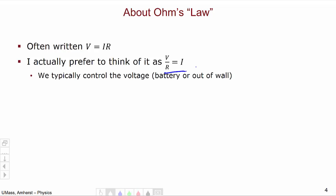I prefer this format because we typically control the voltage either by using a battery with a specific voltage like a 12 volt battery or a 9 volt battery or we've hooked our resistor up to the wall with 120 volt potential difference.